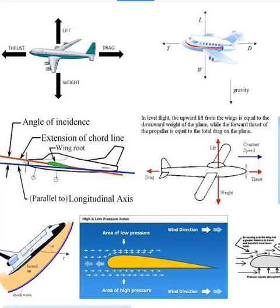The pilot can change the altitude by either increasing or decreasing the power of the engines. When descending, the pilot will decrease the engine power, which will reduce the plane's thrust. This reduction in thrust also reduces lift and increases drag, further slowing the plane.